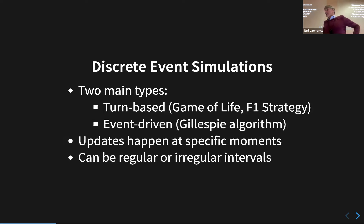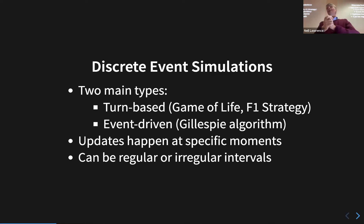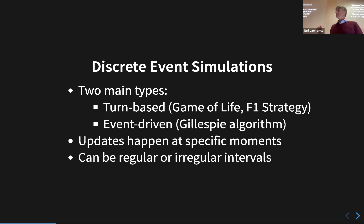It becomes a problem when people aren't aware of model limitations and take them too literally - as happened in the 2008 financial crisis, where people were using Gaussian independent models of risk and selling insurance on portfolios with enormous consequences. Discrete event simulations are either turn-based like the Game of Life or Wolfram's cellular automata, or event-driven like the Gillespie algorithm. Updates happen at specific moments - either regular or irregular intervals - and I've provided links where you can find Python implementations.